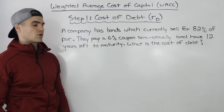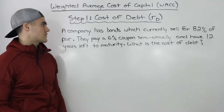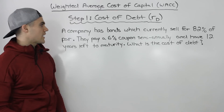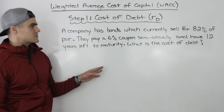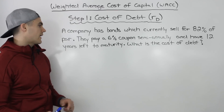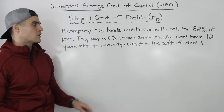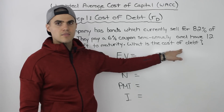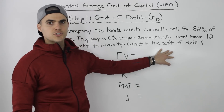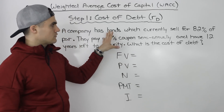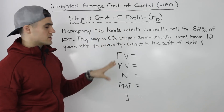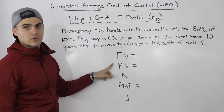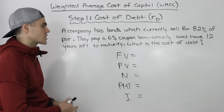Here's an example of a scenario where you're going to have to find the cost of debt yourself. Let's say a company has bonds which currently sell for 82% of par, they pay a 6% coupon semi-annually and have 12 years left to maturity. What is the cost of debt? As I mentioned, when they're asking for the cost of debt, they're pretty much just asking for the yield to maturity. And whenever you're given information like this about the bonds of a company, you're almost always going to have to use your financial calculator, like we were doing back in the bonds chapter.